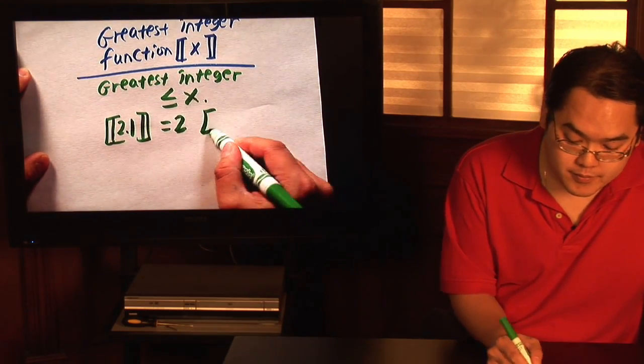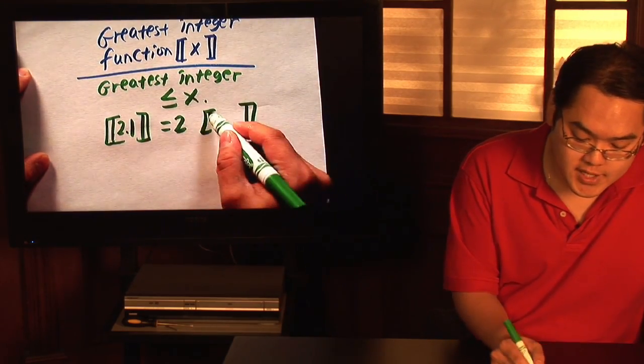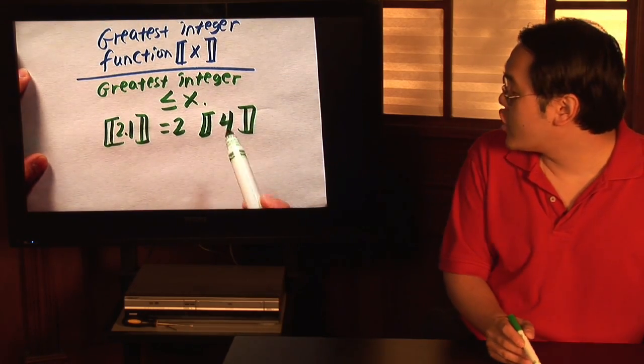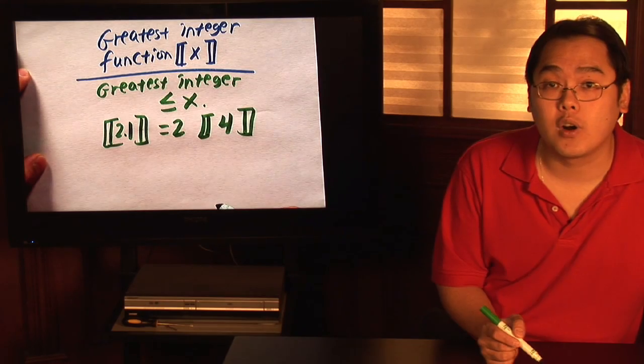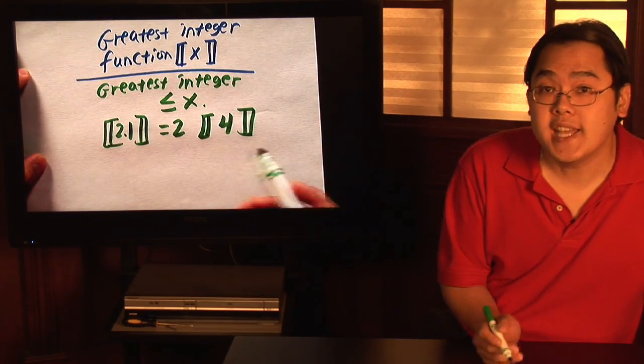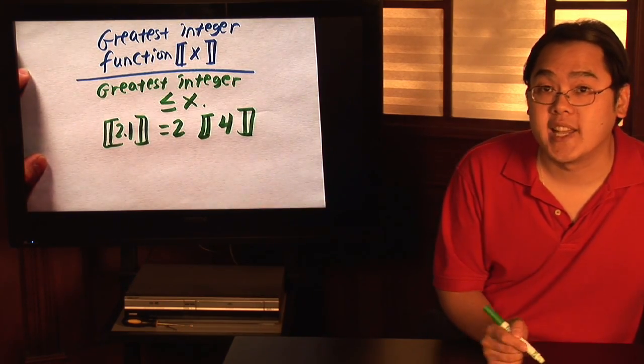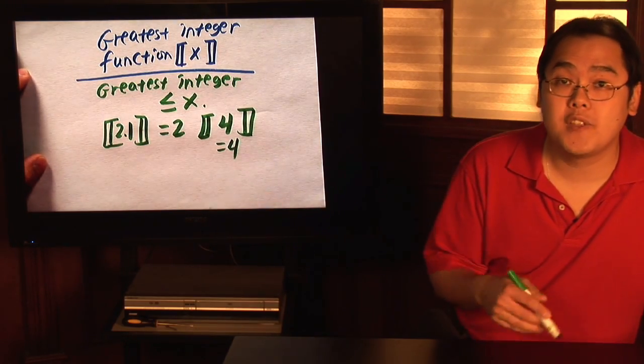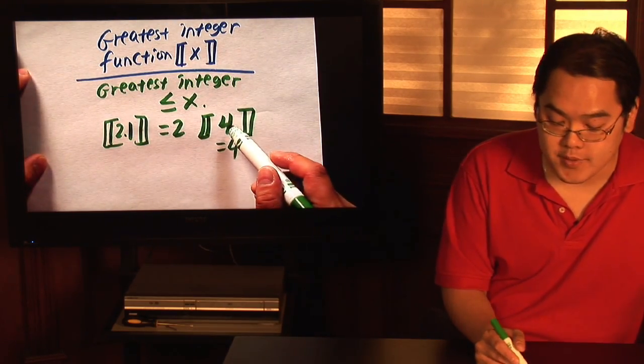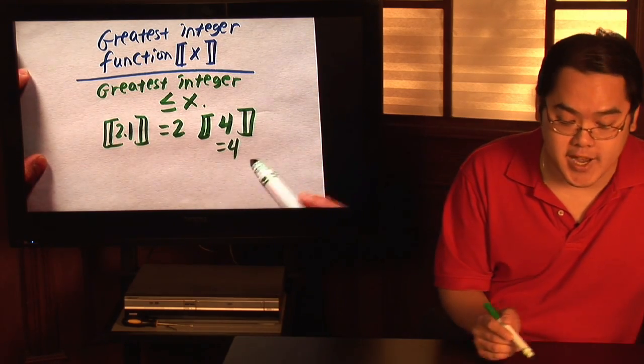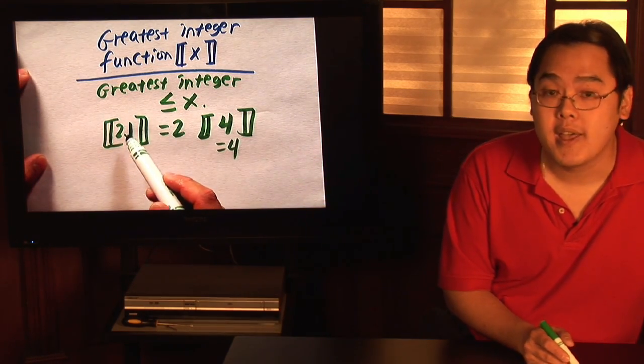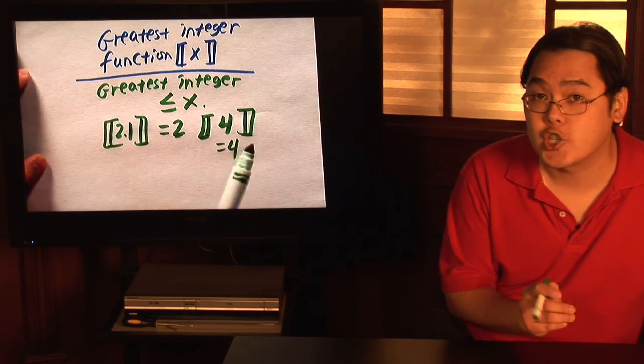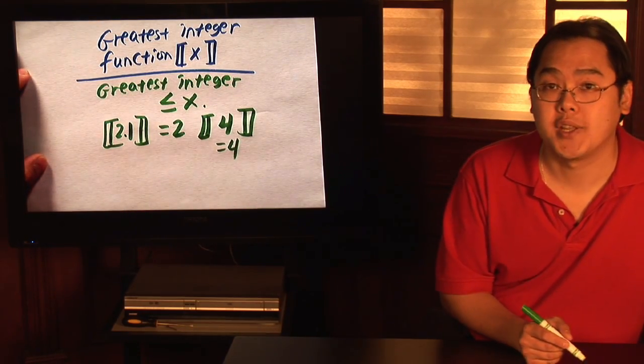What about the greatest integer of 4? In other words, what is the greatest integer less than or equal to 4? Well, since 4 itself is an integer, the greatest integer less than or equal to 4 is 4. So if there's already an integer in there, the greatest integer is just what's inside. But if they give it to you in decimal form, then you have to think about the integer that is less than or equal to the number on the inside.